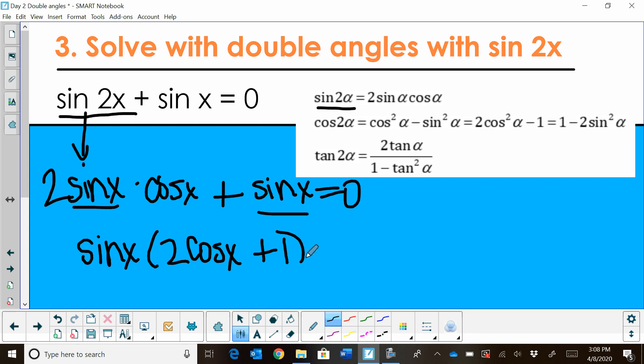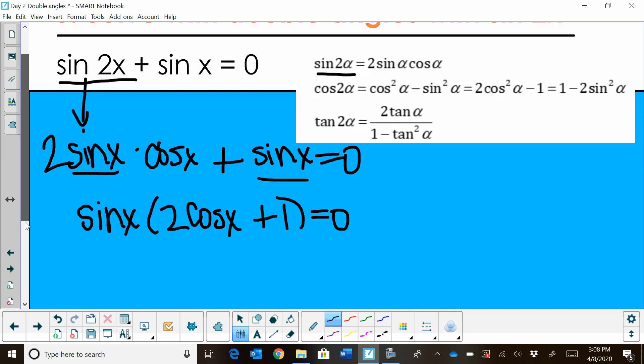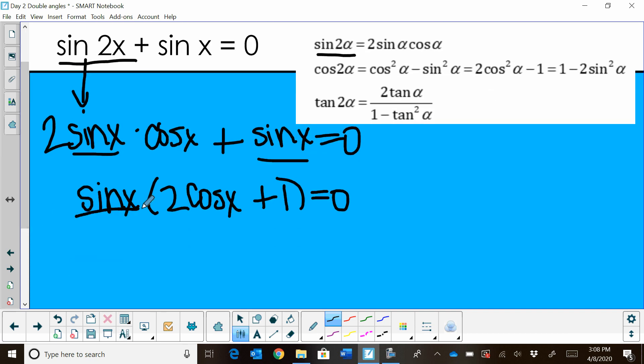Now if you're unsure about factoring, you just find your common factor. You divide each term by that factor. And then you can check by distributing it back in. And you should get the previous step. Okay. Once you get to here, then this is all the way factored. So you're going to set each factor equal to zero.